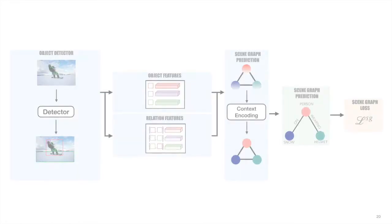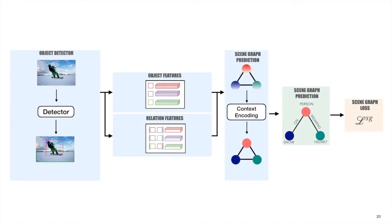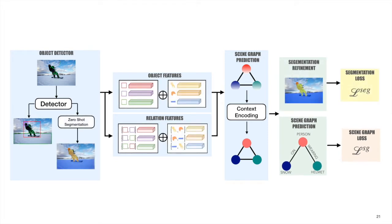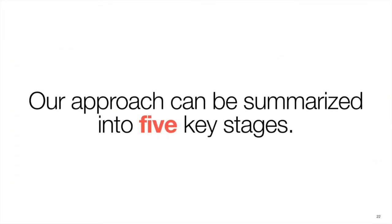Our approach builds on top of the standard pipeline for scene graph generation. Various features extracted from an object detector are passed on to a global context aggregator before generating a scene graph. We add additional modules to effectively ground objects and relations to pixel-level regions within the image. We can split our approach into five key stages.